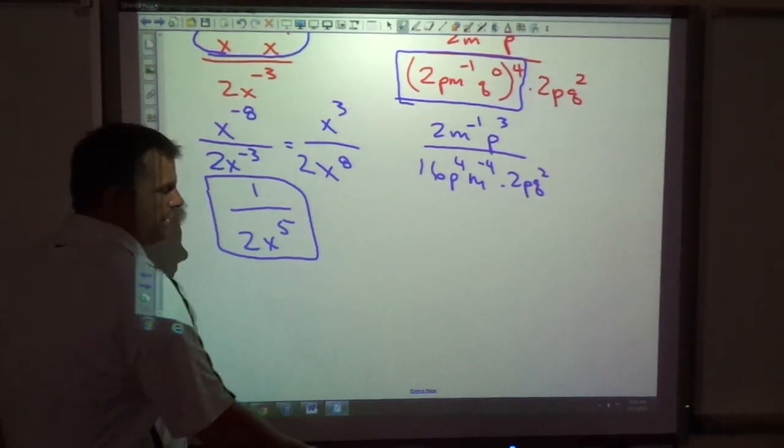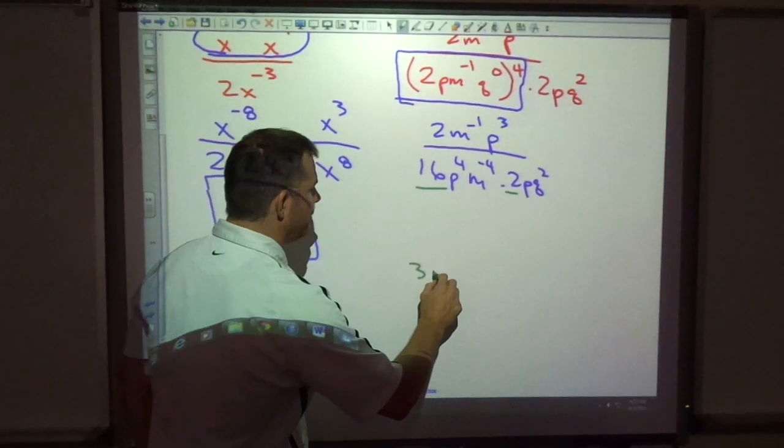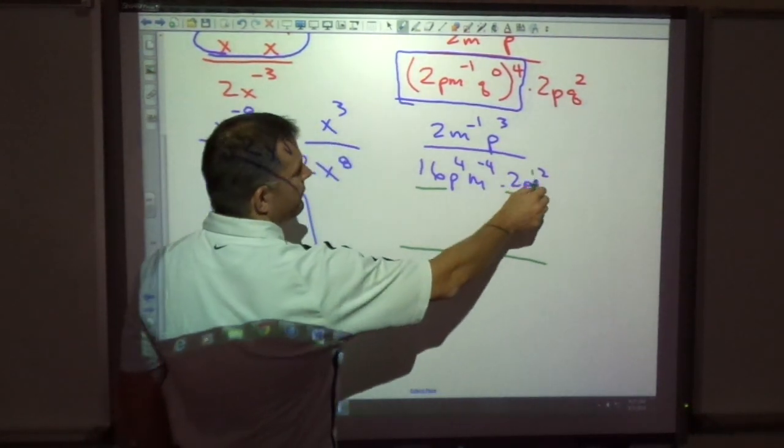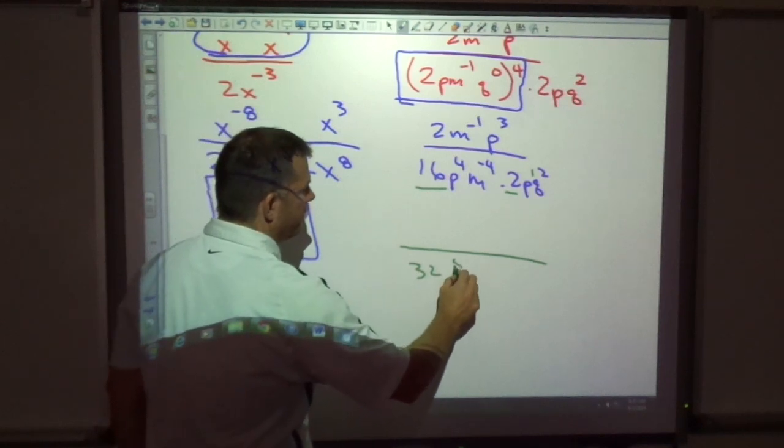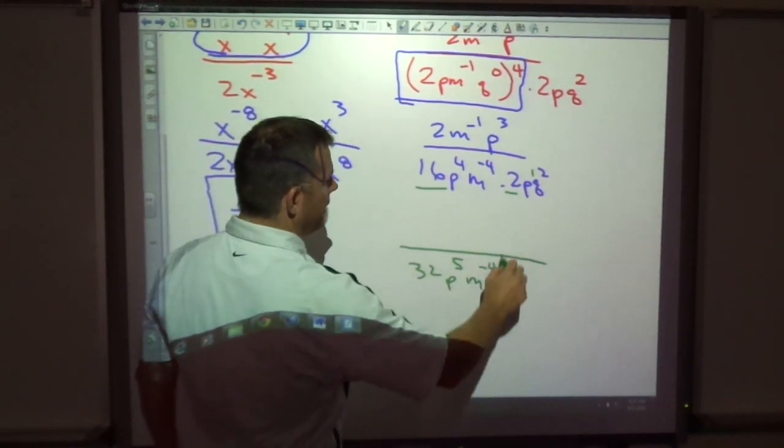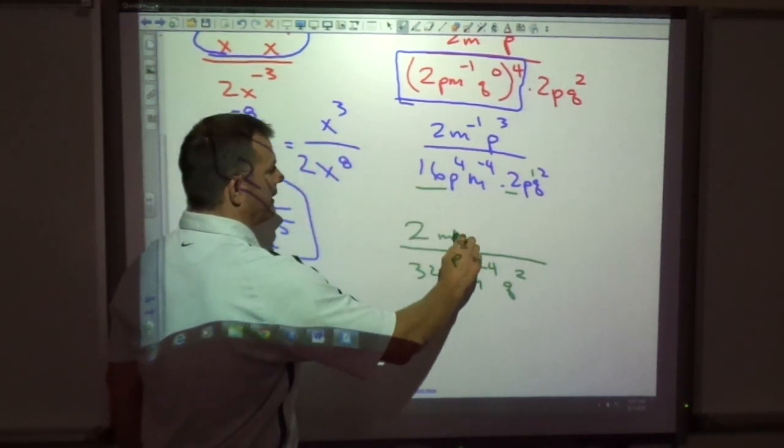Okay, can I clean up some things here on the bottom? I've got some coefficients, 16 and 2. That makes 32. And my p's, there's one p over here and 4 more. So there's p to the 5th. Here's m to the negative 4th. And q squared. Up on top, I've got still this same thing.